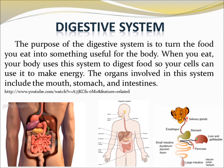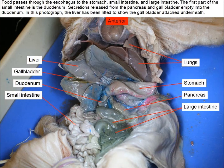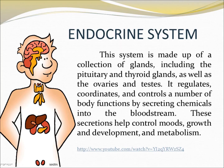Digestive system. The purpose of the digestive system is to turn the food you eat into something useful for the body. When you eat, your body uses this system to digest food so your cells get the nutrients they need. This is a picture of the pig's digestive system. You can see the parts of the digestive system here — liver, gallbladder, etc.